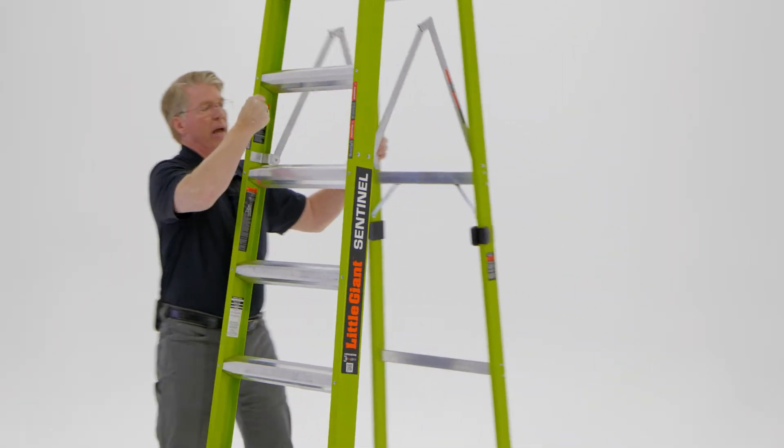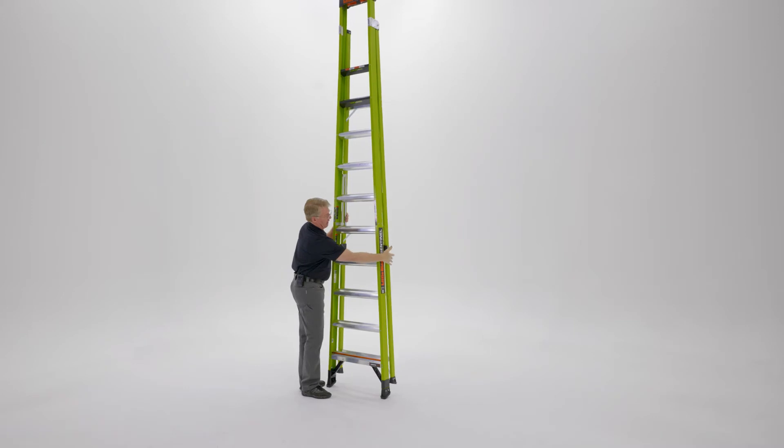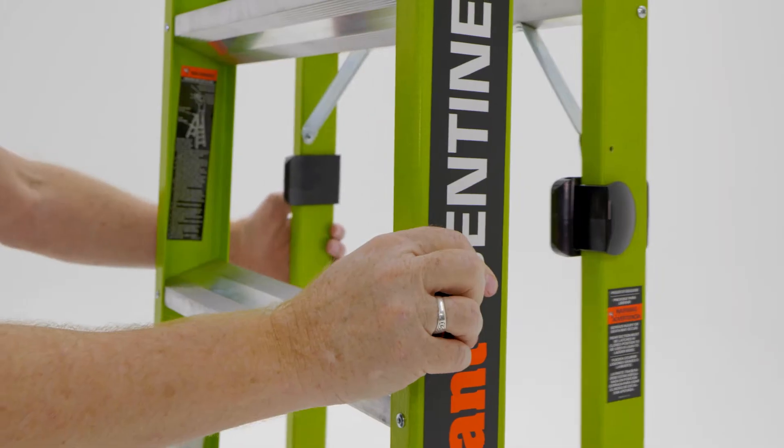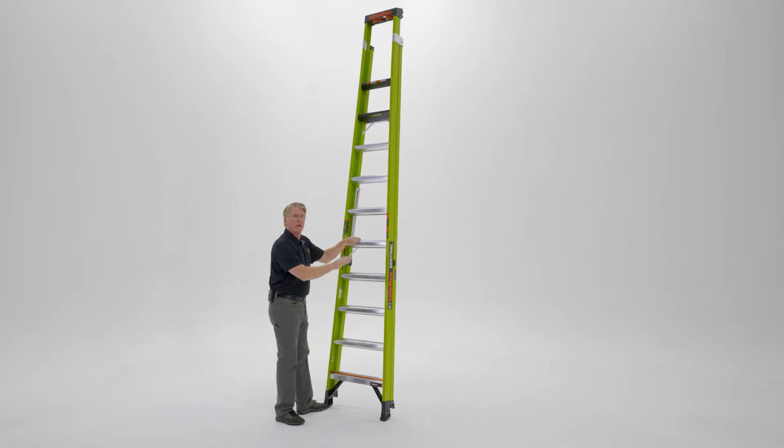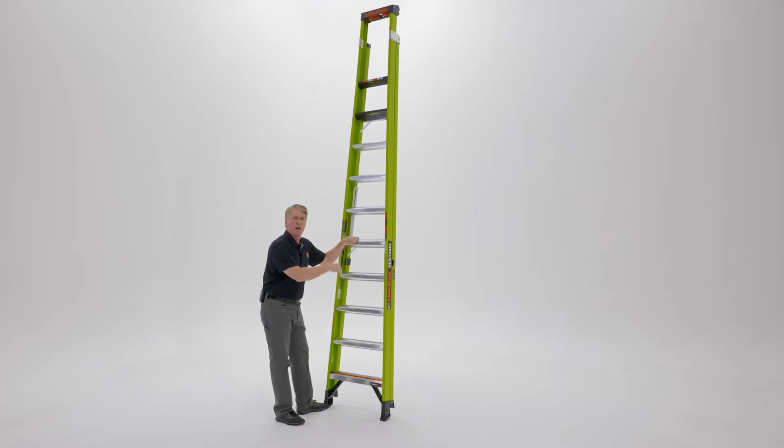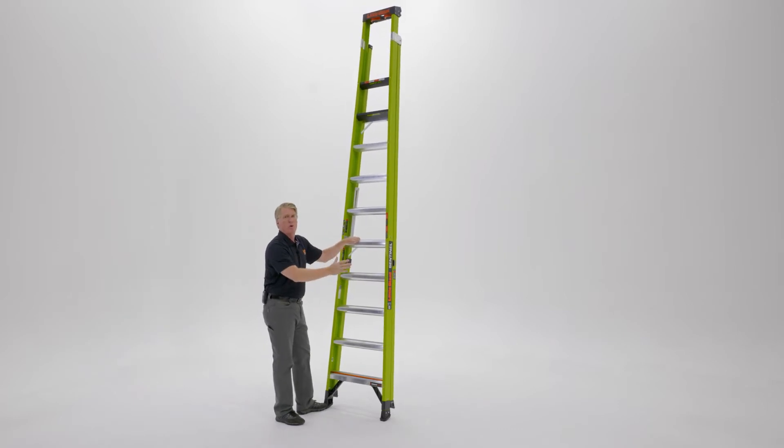Close that back end. You'll see these rail locks on the back. Pull them tight. Now the back legs are locked into place so that when you lean it against the wall, they won't swing out and make contact with the ground, throwing your balance off.